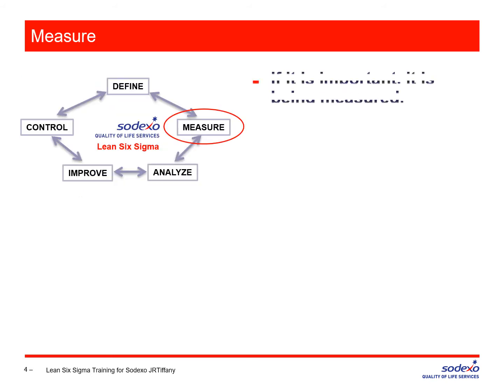You may have heard the saying: if it is important, it is being measured. Well, in the measure step, we measure something. In the define step, we gave a snapshot of some occurrence — at the moment the project began, we had sales of this much, a survey response of this amount, a temperature of whatever. We had just one data point. In the measure step, we talk about how we got up to that data point and how we're going to collect data throughout the remaining time of the project.